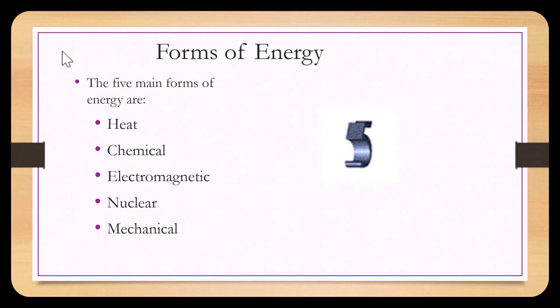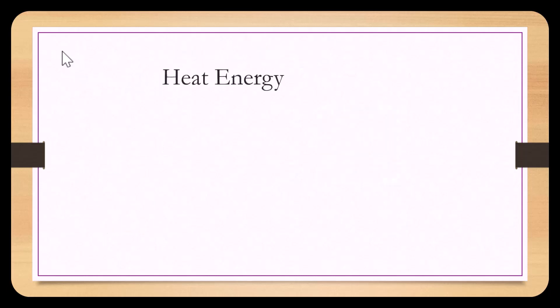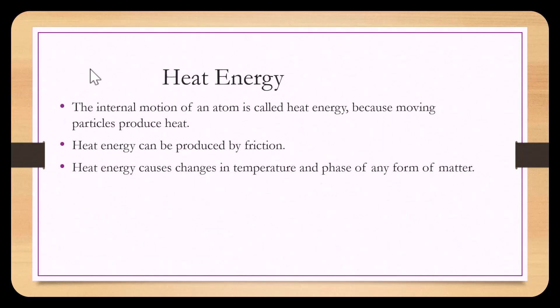The five main forms of energy are heat energy, chemical energy, electromagnetic energy, nuclear energy, and mechanical energy. The internal motion of an atom is called heat energy, because moving particles produce heat. Heat energy can be produced by friction. Heat energy causes changes in temperature and phase of any form of atom.